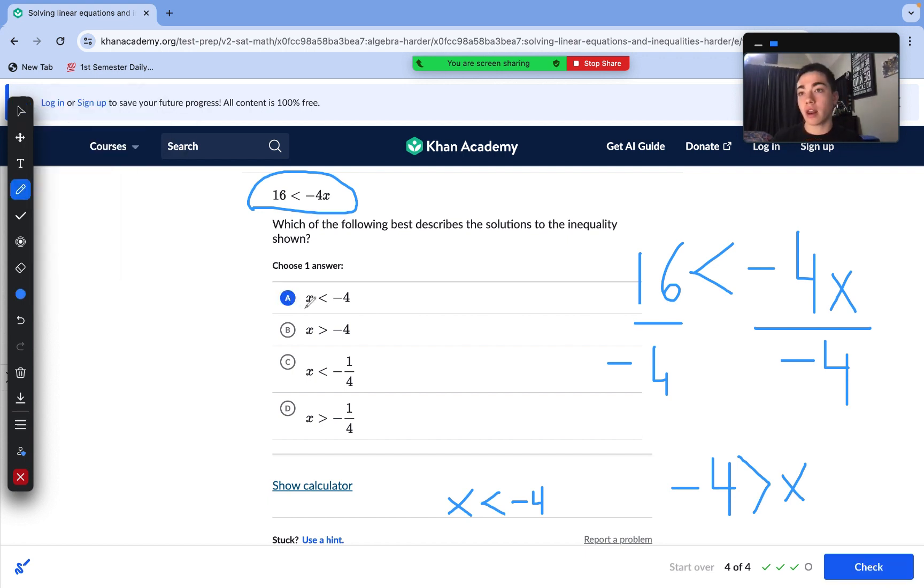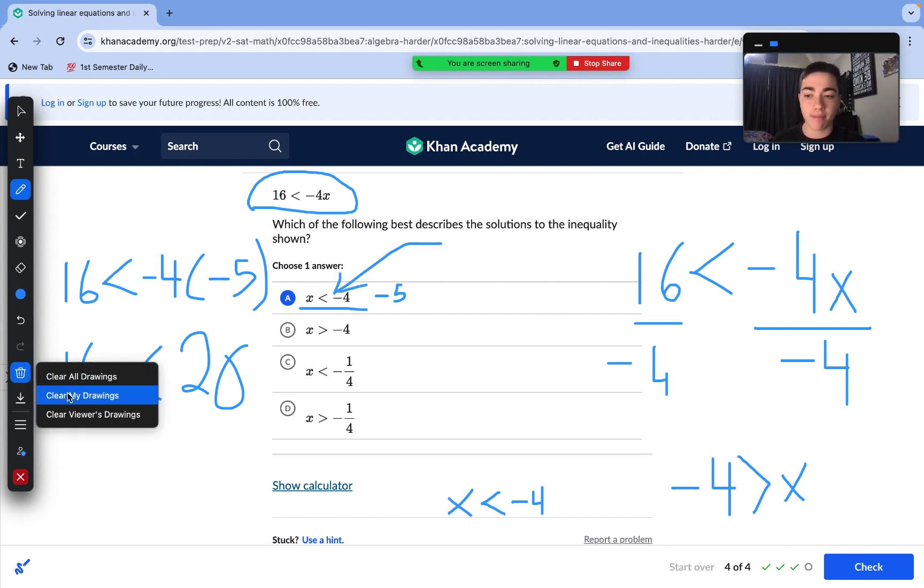Basically, in our first video, we went over substituting in values to check equations. We can also substitute values to check inequalities. What is a value that's less than negative 4? Negative 5 is less than negative 4. So let's substitute in x for negative 5 and see if our inequality is true. We have 16 less than negative 4 times negative 5. Negative 4 times negative 5 is 20. And is 16 less than 20? It indeed is. So we do get a true statement when we follow this inequality. So that proves answer choice A as being correct.